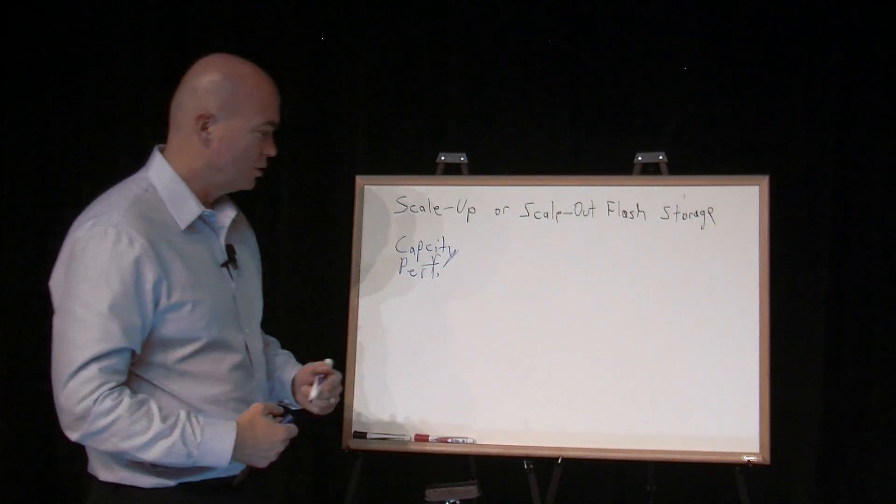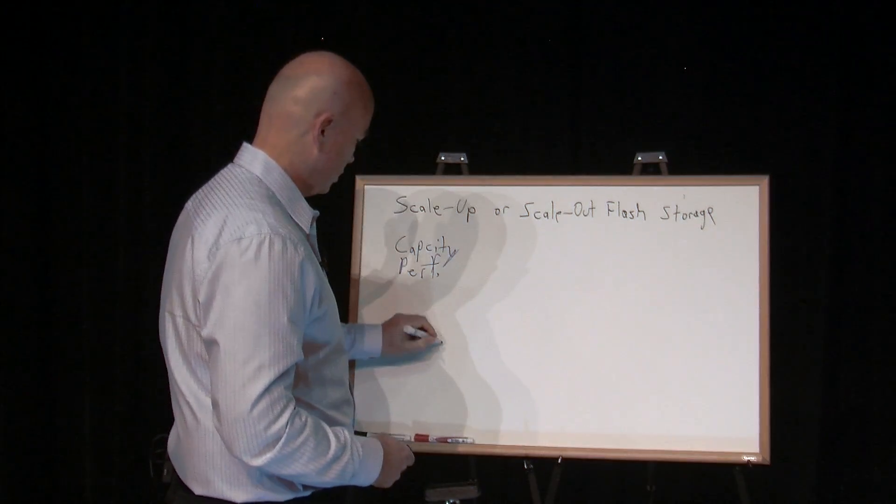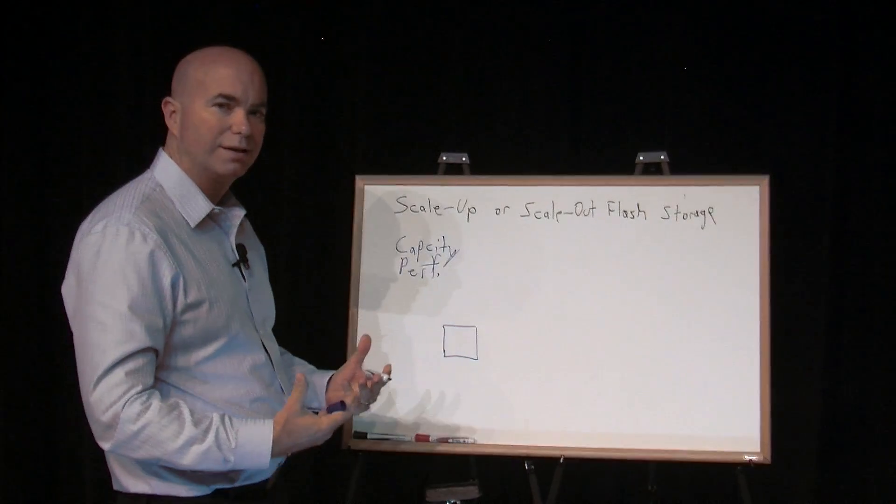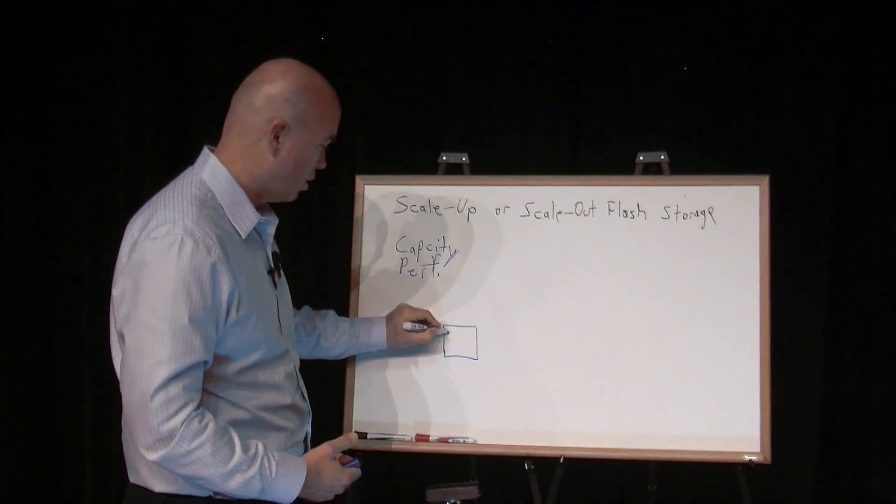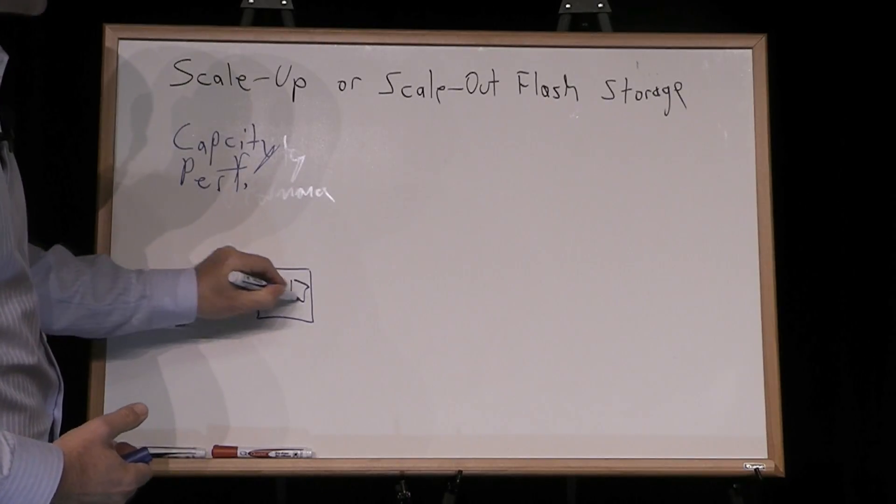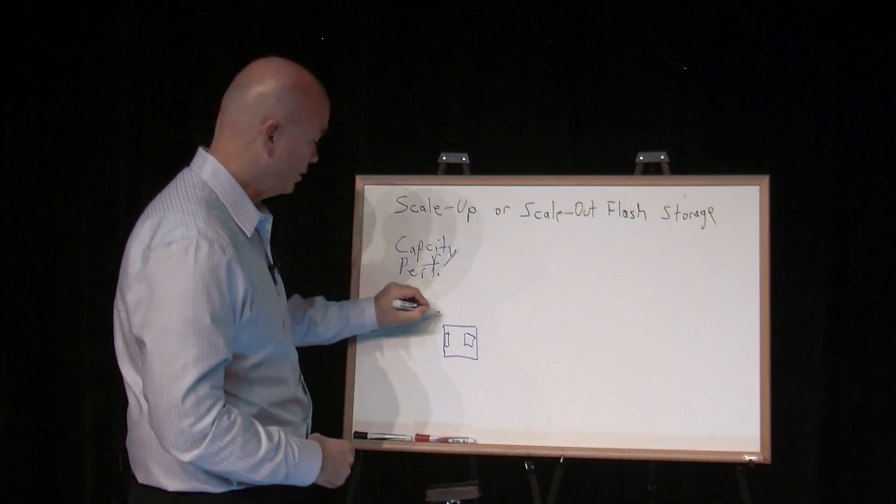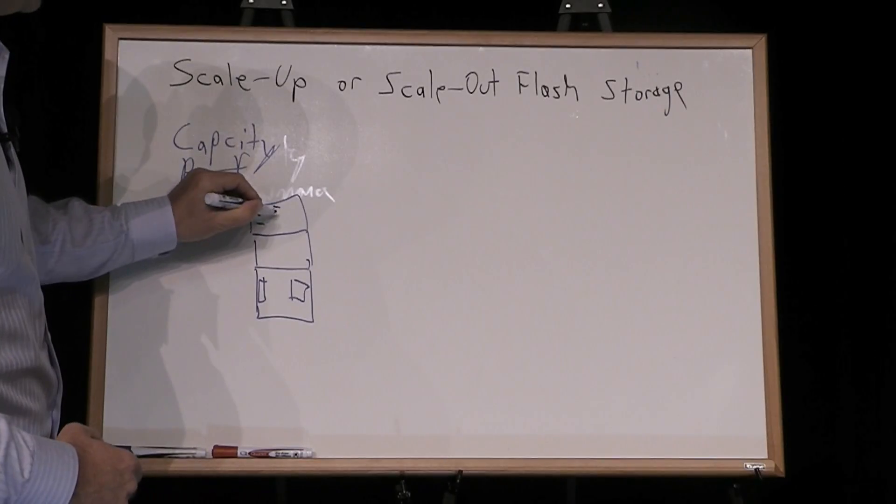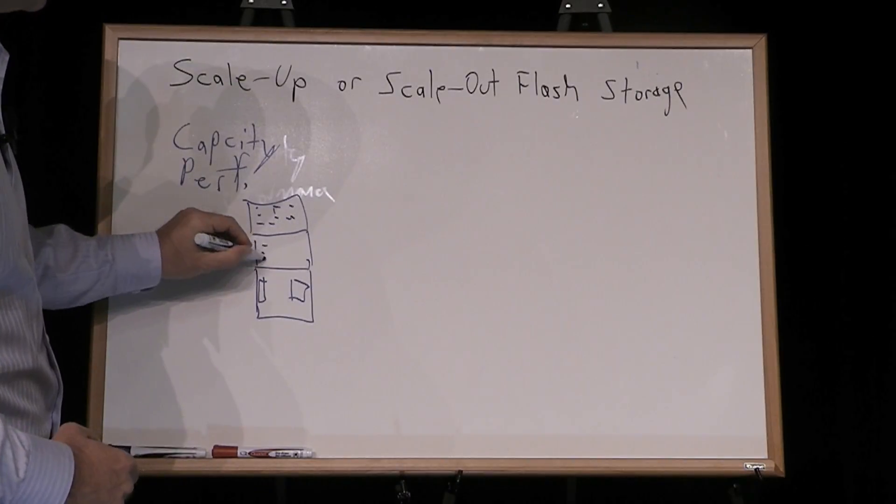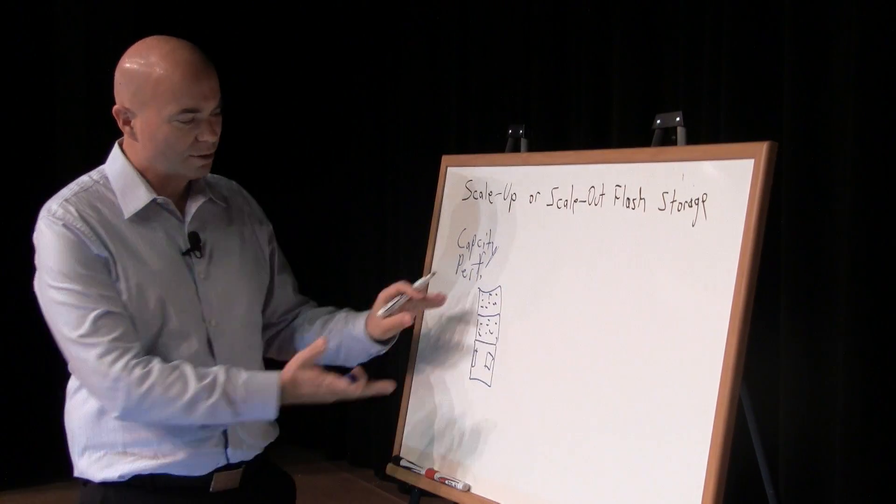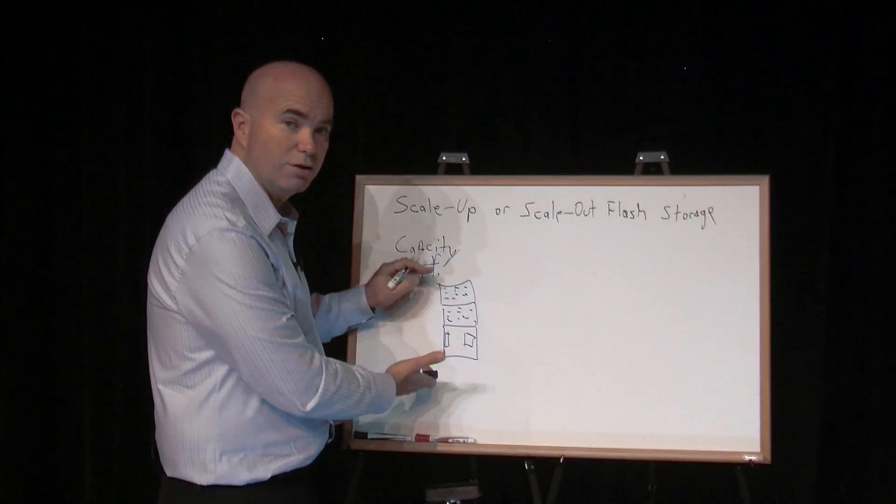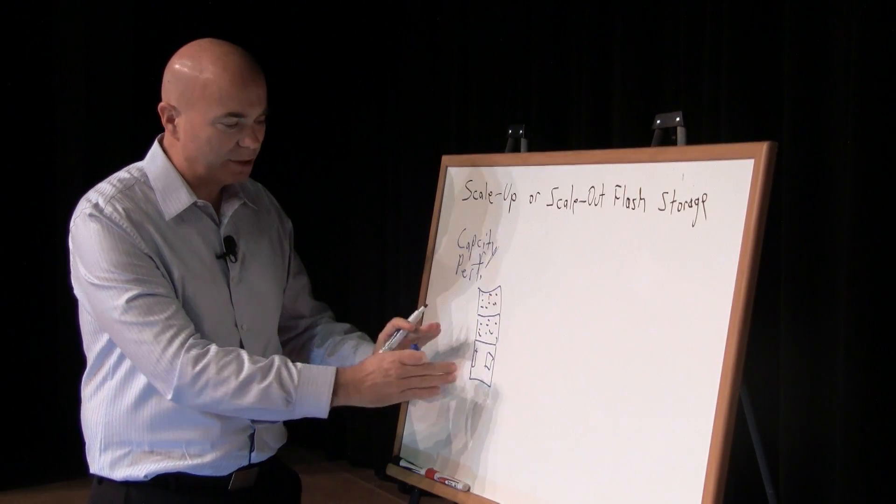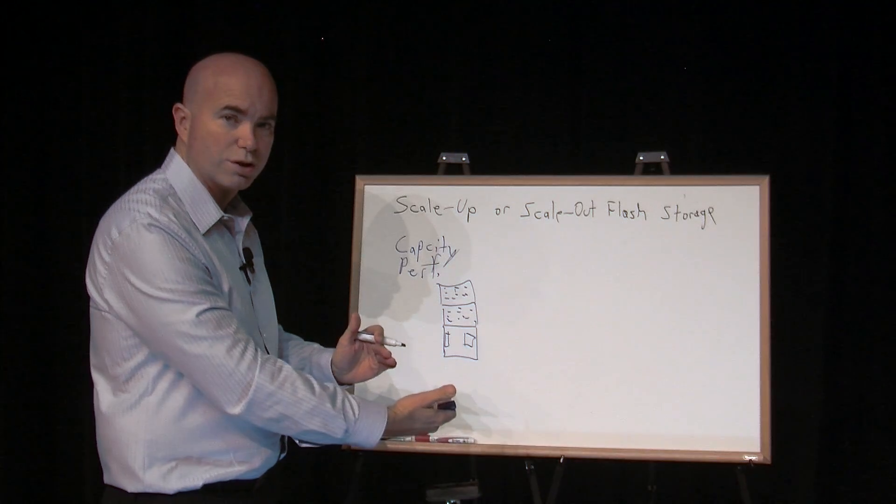Well, in the scale-up use case, the way that works is we buy one box and we're essentially paying for all the performance that the box could generate up front. So all the capability is in that box. Now capacity can be added by adding shelves to this box and then adding drives to those shelves. In general though, there's a finite number of shelves that you can add to the system. And then once you reach that limit, you have to buy another storage system.